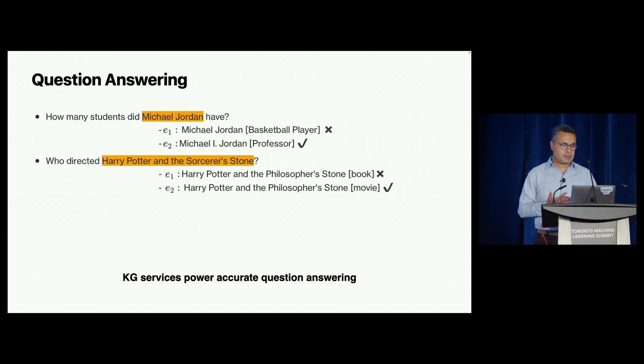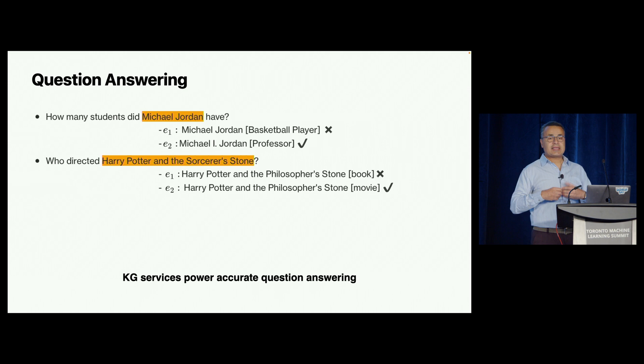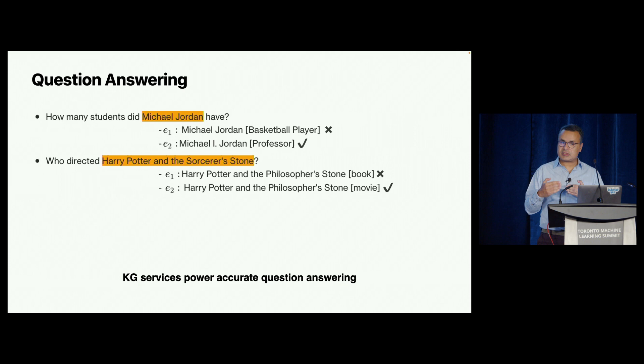Here are more use cases. For question answering: 'how many students did Michael Jordan have?' — you want to land on Michael Jordan the professor, not Michael Jordan the basketball player, because I'm talking about students. When you say 'who directed Harry Potter and the Sorcerer's Stone?' — because I said 'directed,' I don't want you to land on the book, because the book doesn't get directed but the movie does, even if the book is more popular. This KG service powers most question answering when you talk to Siri and get direct answers.